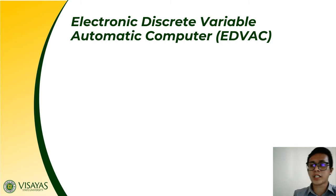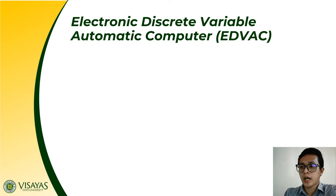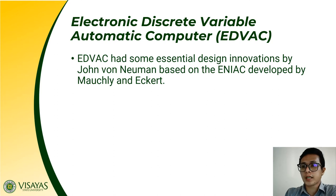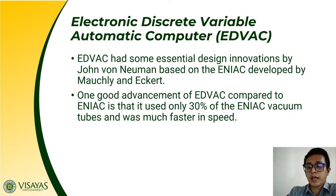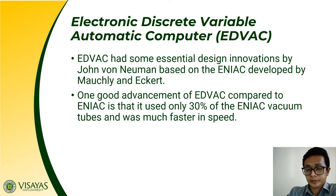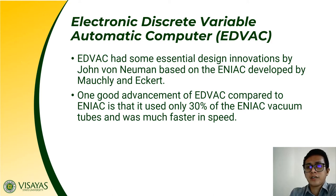From ENIAC, it was improved into the EDVAC, or Electronic Discrete Variable Automatic Computer, which incorporated essential designs and innovations made by John von Neumann based on ENIAC developed by Mauchly and Eckert. One advancement of EDVAC is that it only consumed 30% of ENIAC's vacuum tubes and was much faster in speed. However, it still consumed large amounts of electricity due to the presence of vacuum tubes, and still dissipated more heat.